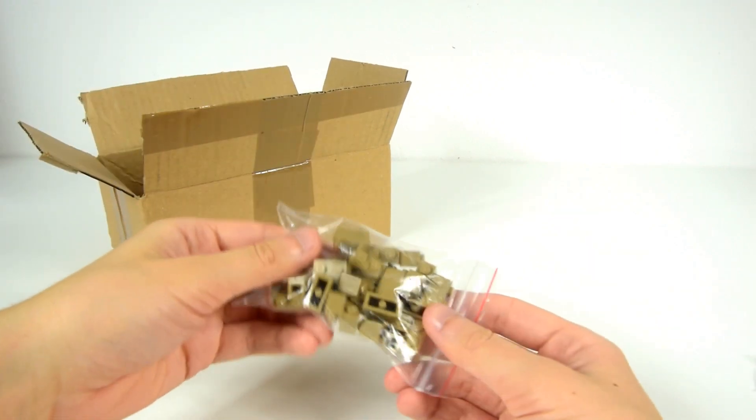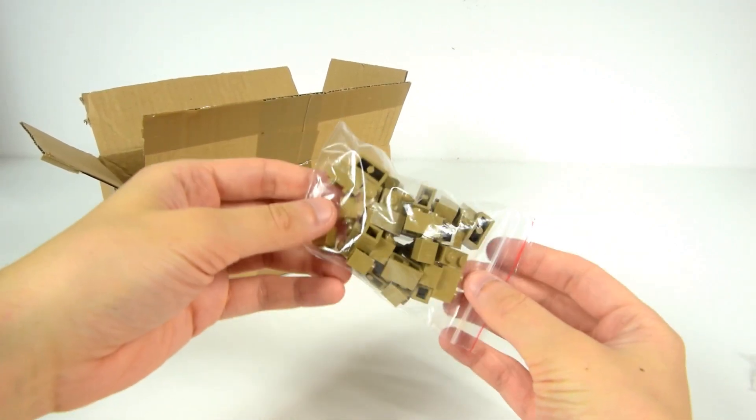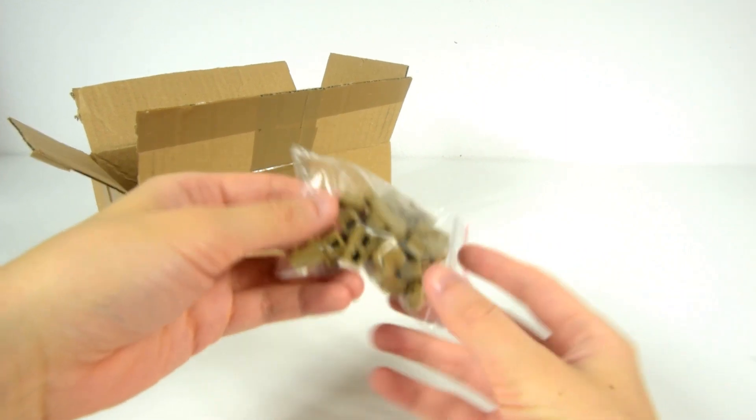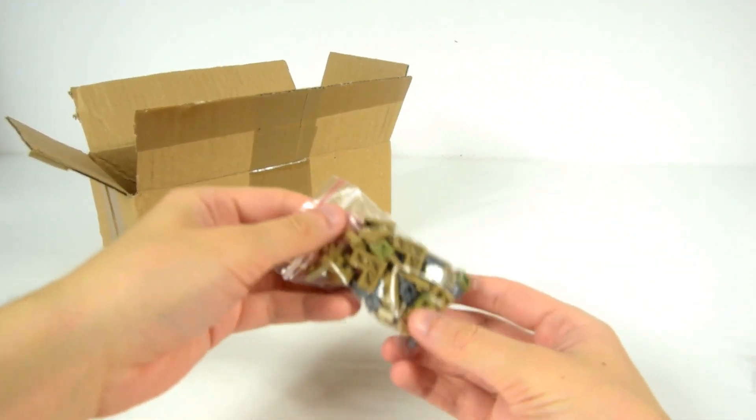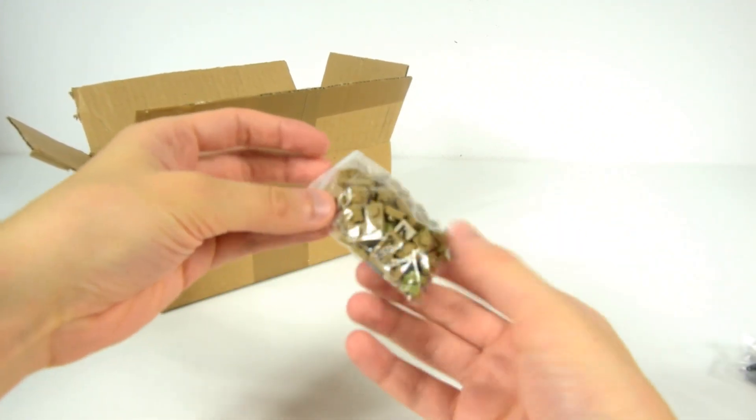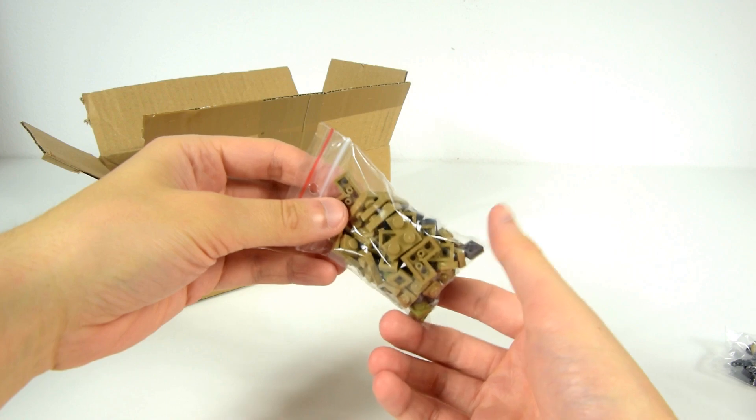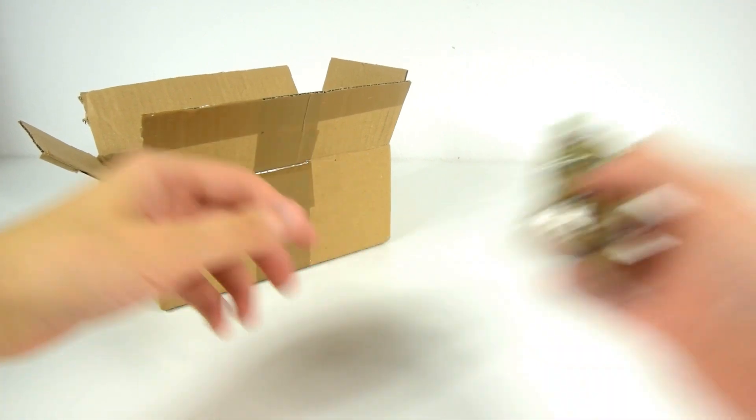I believe that 20 dark tan 1x1 and 1x2 bricks. And here we have 1x1 plates as well as some corner parts, mainly in dark tan color, but also in dark bluish grey and olive green.